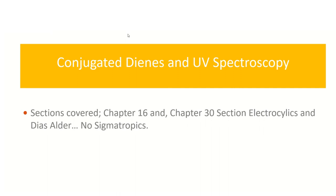Welcome to our first lecture on conjugated dienes and UV spectroscopy. We will cover chapter 16 of the Clayden book and also a small portion of chapter 30, which I'll point out to you in the coming week. A series of these lectures will be given to you to compensate for offline activities.